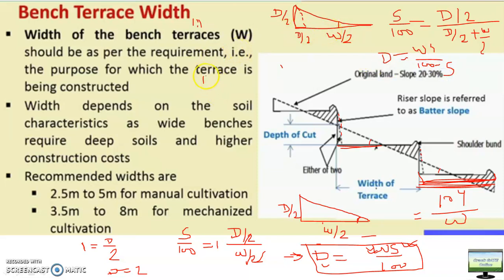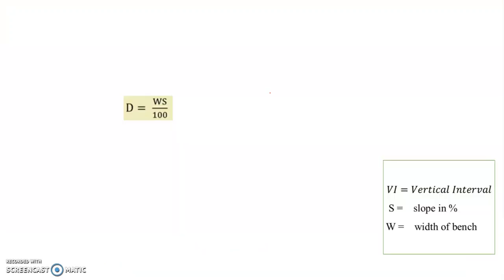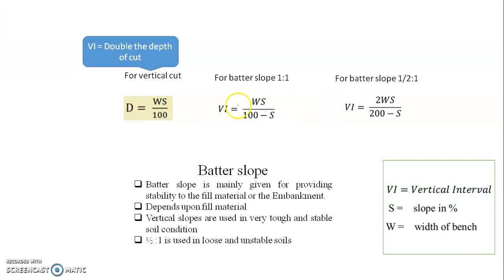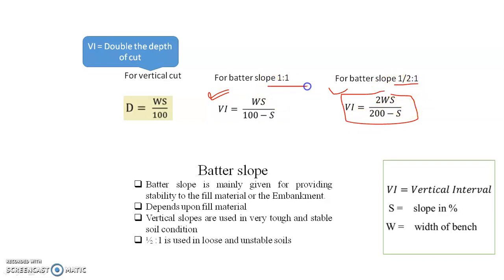If batter slope is half:1, then it will become d/4, because d/2 × 1/2 = d/4. If you put this here — (d/2) divided by (d/4 + W/2) — then d will become 2Ws divided by (200 − s). So: for half:1 batter slope d = 2Ws/(200 − s); for 1:1 it is Ws/(100 − s); and for vertical cut it is Ws/100.